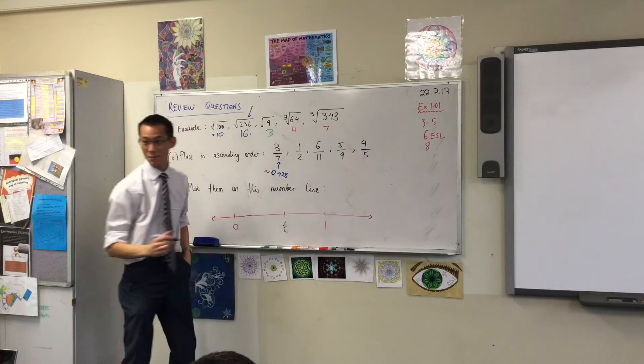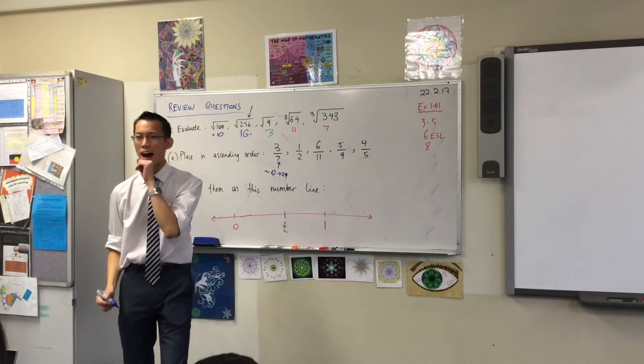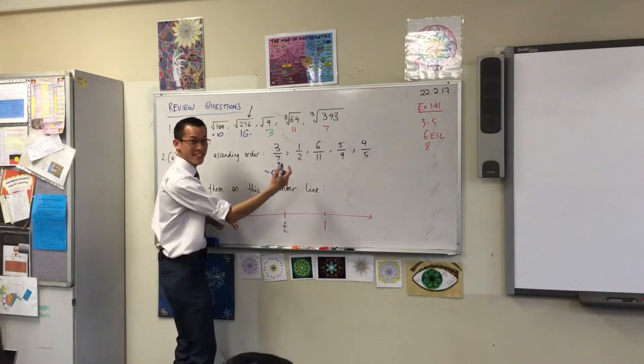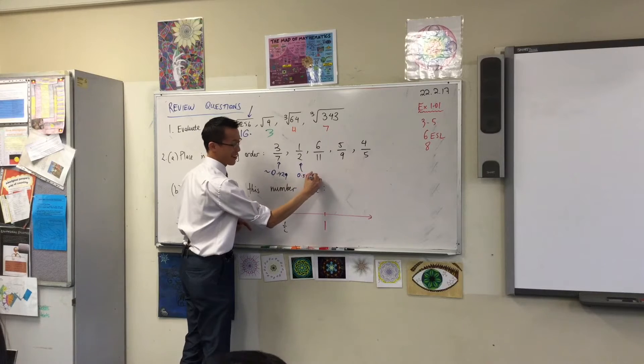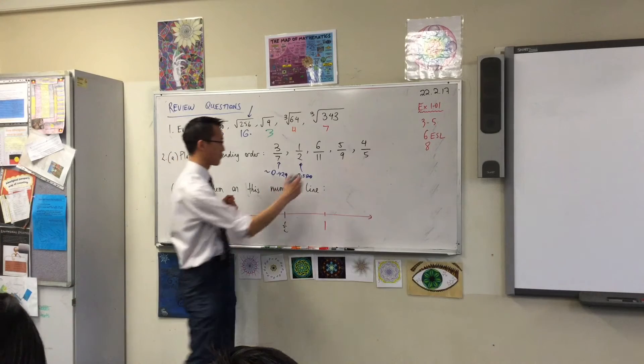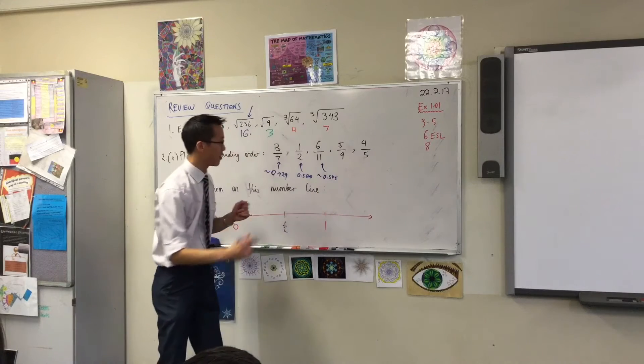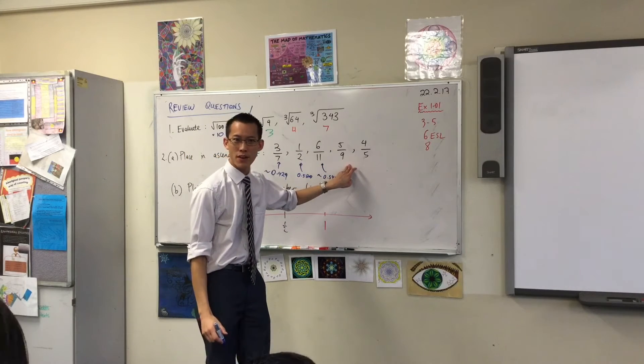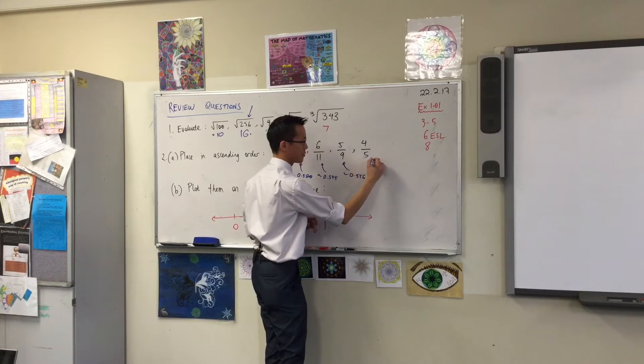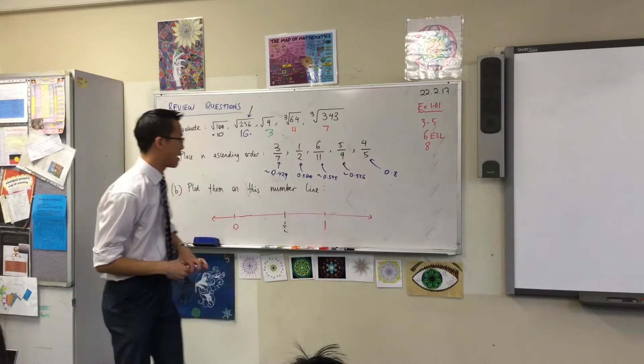A half, which Jake helpfully put on there, you don't need a calculator to work out is 0.5. Who's got six elevenths? 0.545. Five ninths? 0.556. And this one again, you don't really need a calculator to do. All right, now put your pens down for a minute.